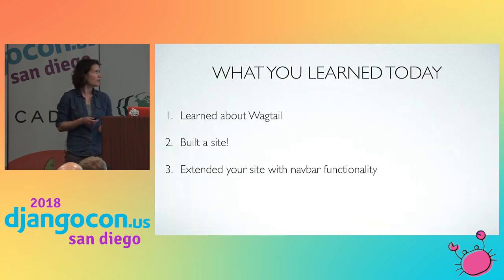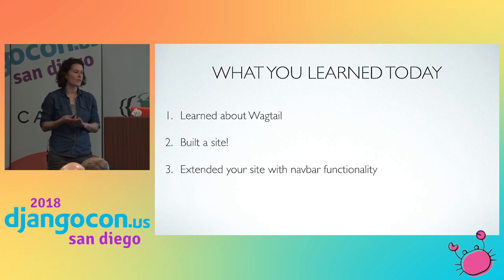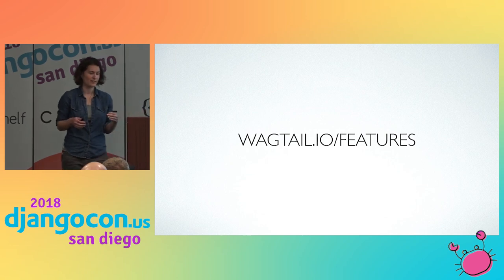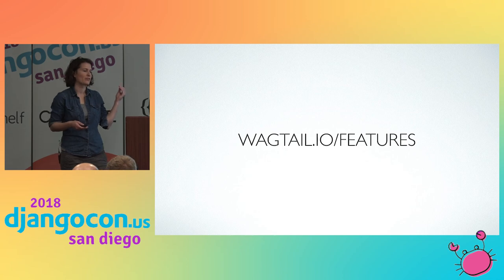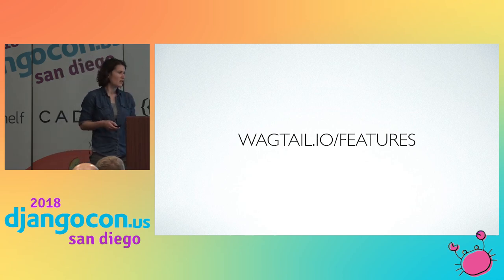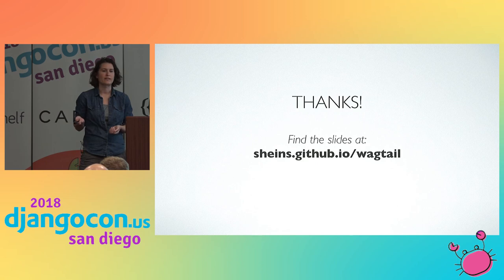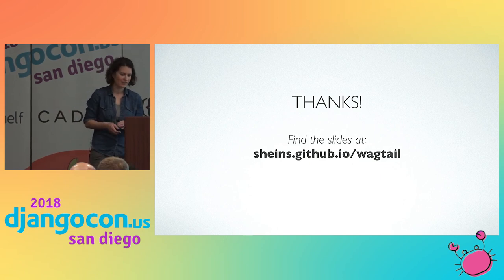Hopefully you learned a little bit about Wagtail today. We built a site together in about 25 minutes and then extended it with navbar functionality. I barely scratched the surface of Wagtail — there is so much more it can do, but those are some of my favorite features for small marketing websites. I encourage you to go explore their other features. You can find these slides at sheins.github.io/wagtail. Thanks so much for coming to my talk.